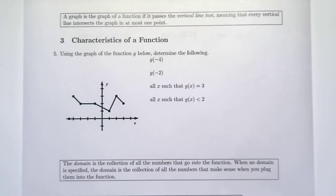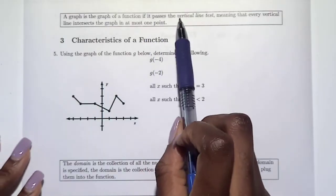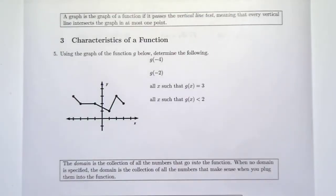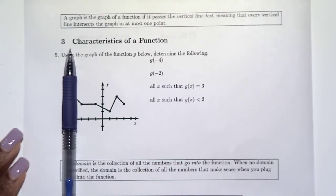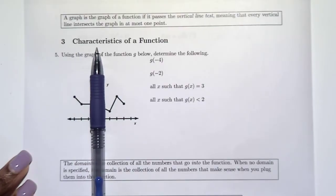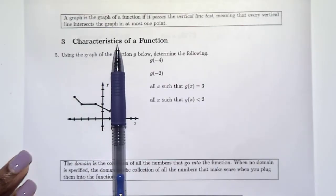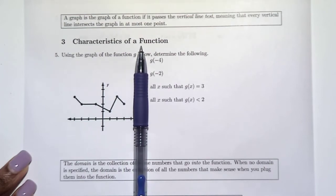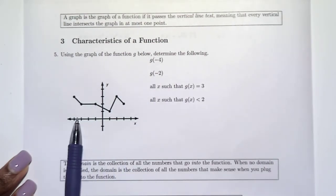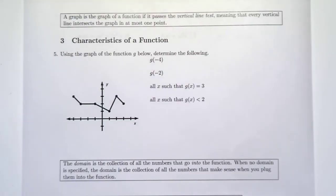We're now on page three. Another way we can figure out whether something is a function or not is by looking at a graph of it. What we're looking for is whether it passes the vertical line test, which means for every vertical line we only intersect the graph at one point. This is the same thing as saying that each x-value only has one y-value.